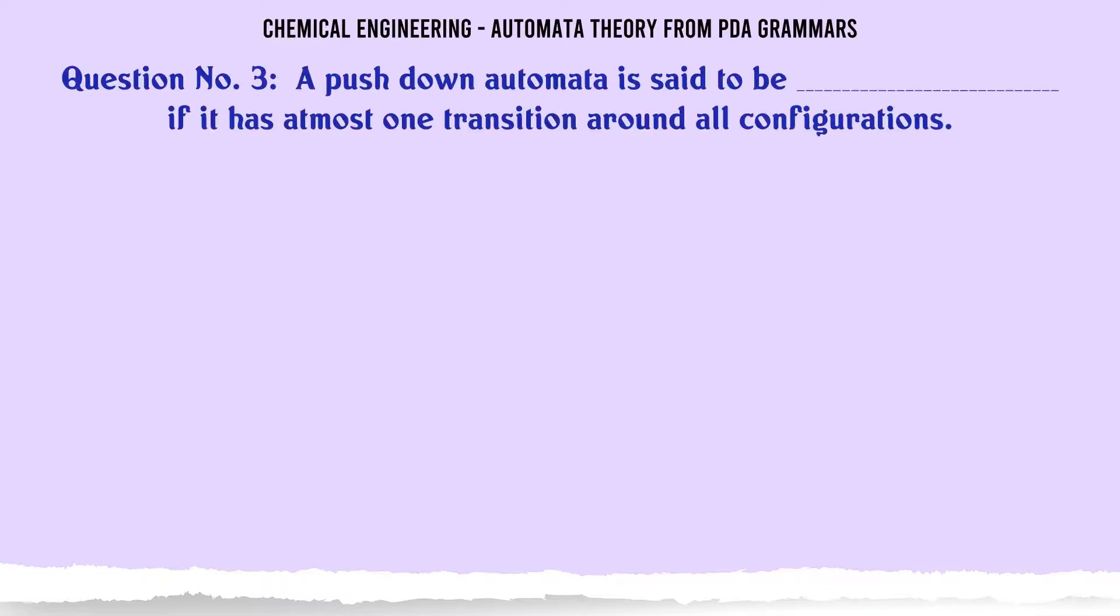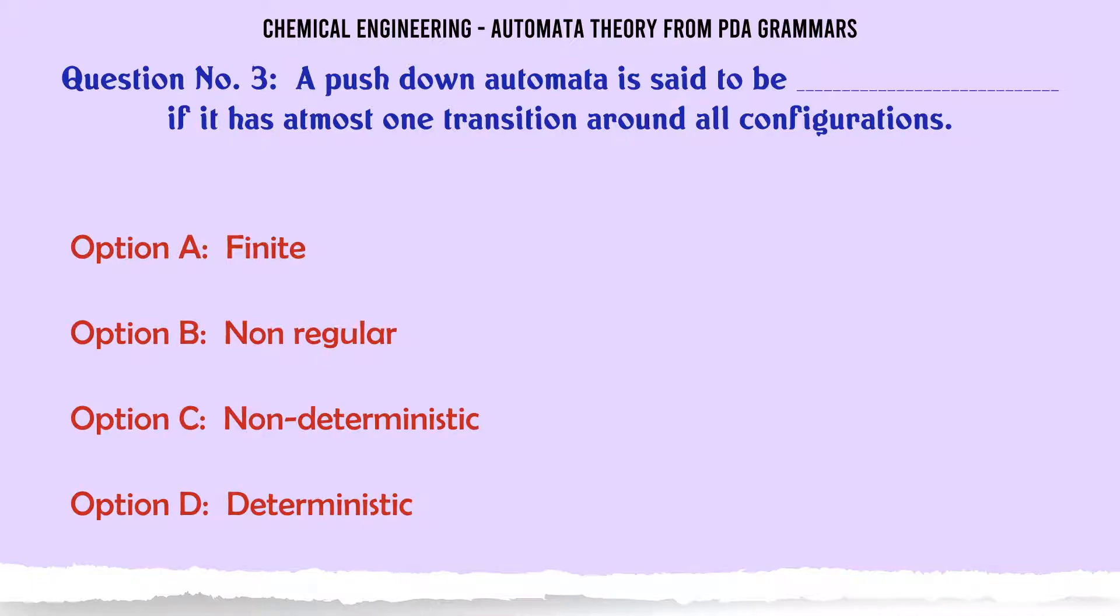A push down automata is said to be what if it has at most one transition around all configurations? Option A: Finite. Option B: Non-regular. Option C: Non-deterministic. Option D: Deterministic. The correct answer is Deterministic.